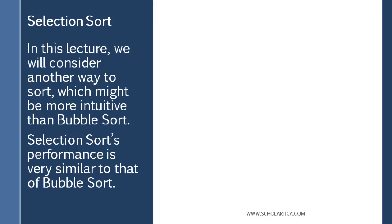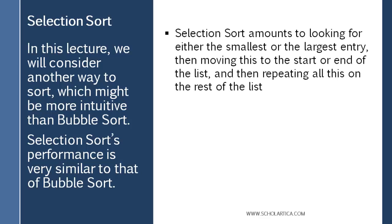The performance of selection sort is very comparable to bubble sort. So what does it mean to say that they have comparable performance? Basically means that the time it takes for them to sort a list of a given size, an array of a given size, is about the same. We'll get more detailed about that later.